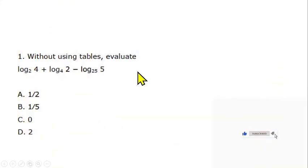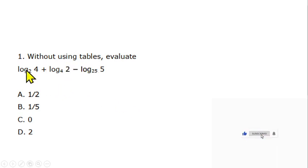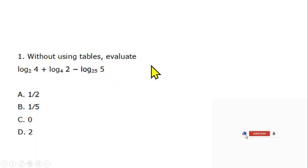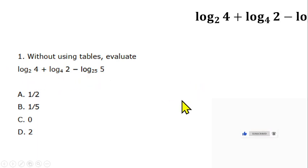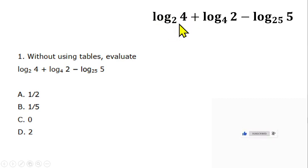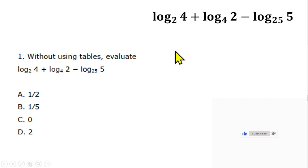Question 1 is from logarithm. Evaluate without using tables: log 4 base 2 plus log 2 base 4 minus log 5 base 25. To solve this, recall the meaning of logarithm. Log 4 base 2 means how many times can you raise 2 to get 4 — that is 2 times. Log 2 base 4 means how many times can you raise 4 to get 2.